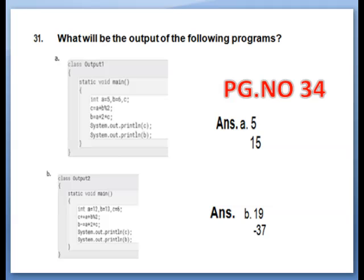Part A: int A equal to 5, B equal to 6, C equal to A plus B modulus 2. Modulus means we will take the remainder. Then B equal to A plus 2 into C. System.out.println of C, System.out.println of B. We have to print the value of C and B.